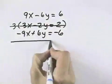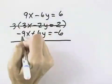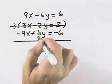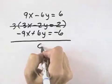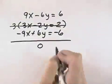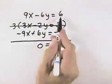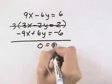Now I can see that the x's do drop out. The 9 and negative 9 cancel each other out. Negative 6 plus 6 is also 0. So not only do we have 0x, but we also have 0y. And then equals 6 plus negative 6 is also 0.